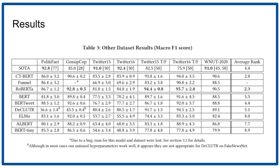There are also some datasets where the state-of-the-art model is performing better — particularly PolitiFact, Twitter 15 with all the labels rather than just the true and false labels, and likewise Twitter 16. And then in WNUT 2020, the state-of-the-art model is also performing better than the language models we tested.